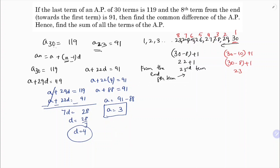Now to find the sum of all 30 terms, S₃₀. Since we have the last term, I'll use the formula: Sₙ = n/2 × (a + l), where n is the number of terms, a is the first term, and l is the last term.